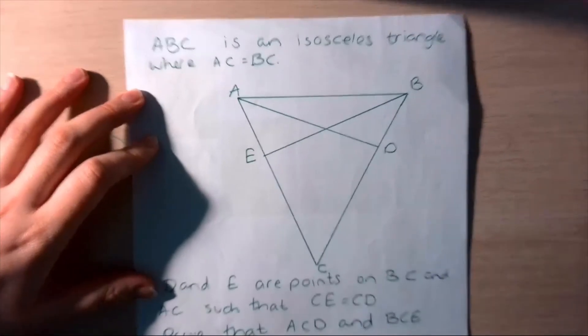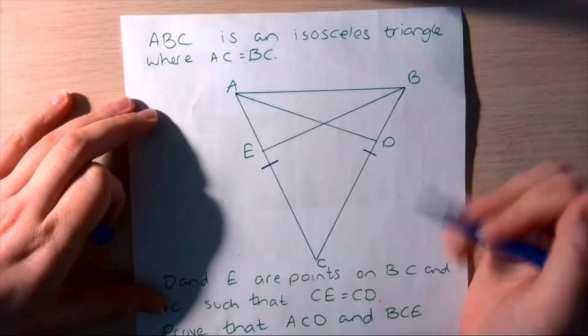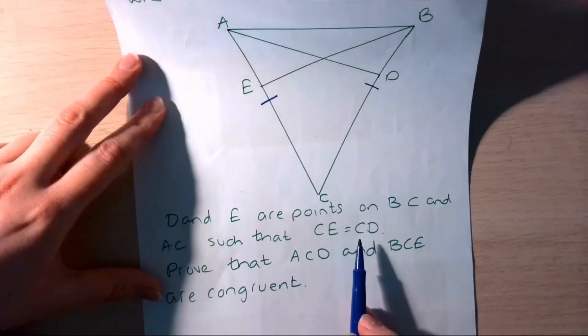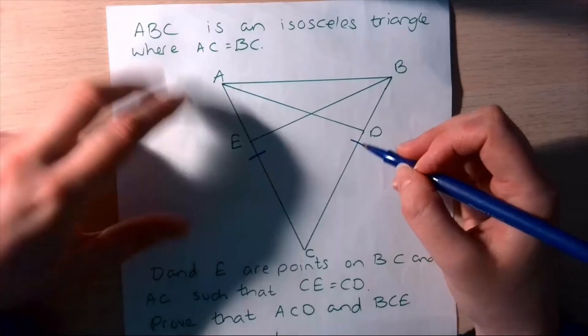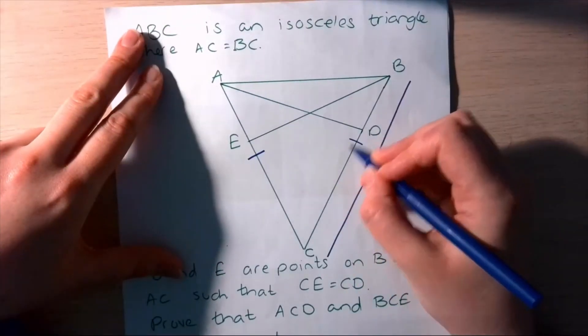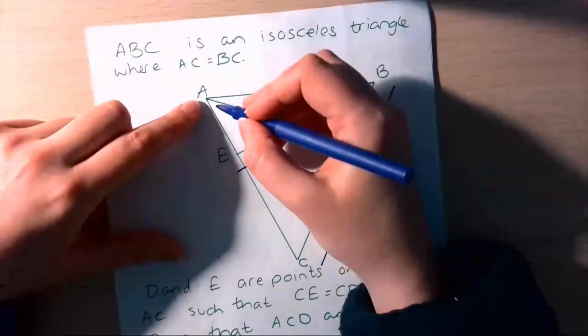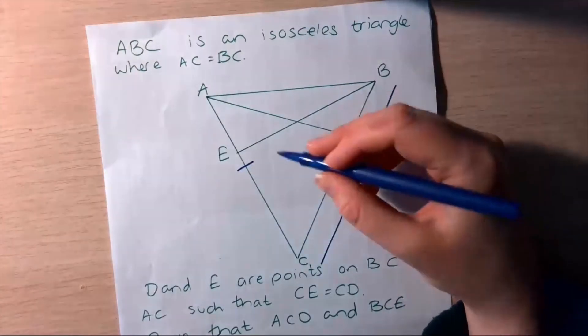One more example, a little more involved. ABC is an isosceles triangle where AC equals BC — I'll mark those sides as equal. D and E are points on BC and AC such that CE equals CD. So those shorter sides are also equal. We need to prove that triangles ACD and BCE are congruent.